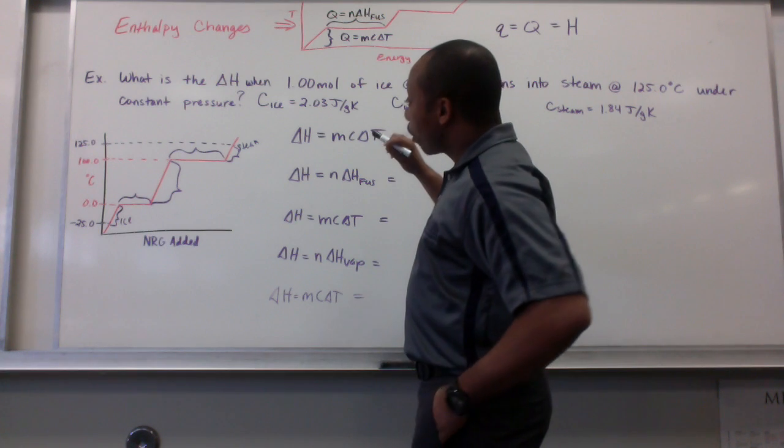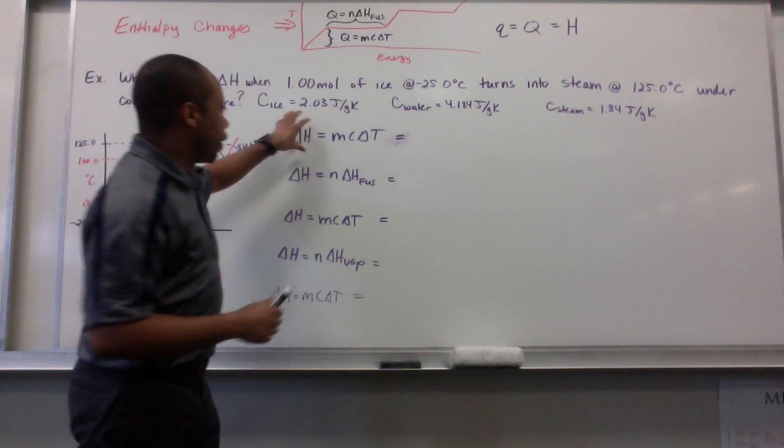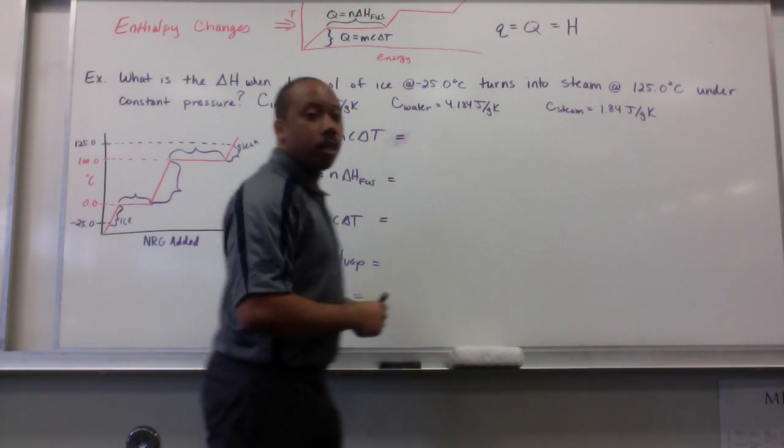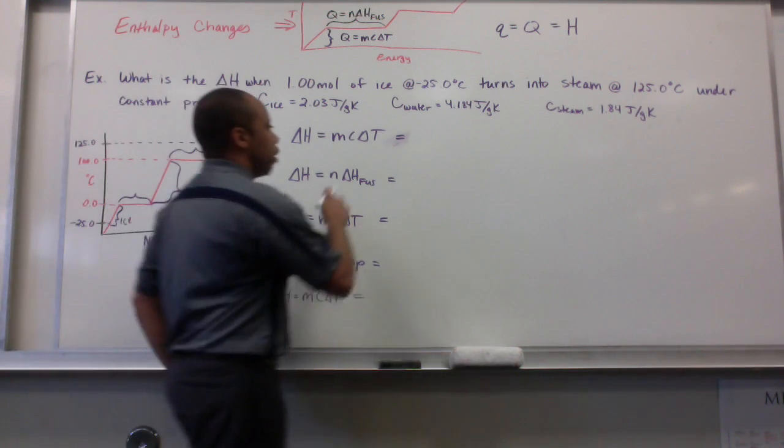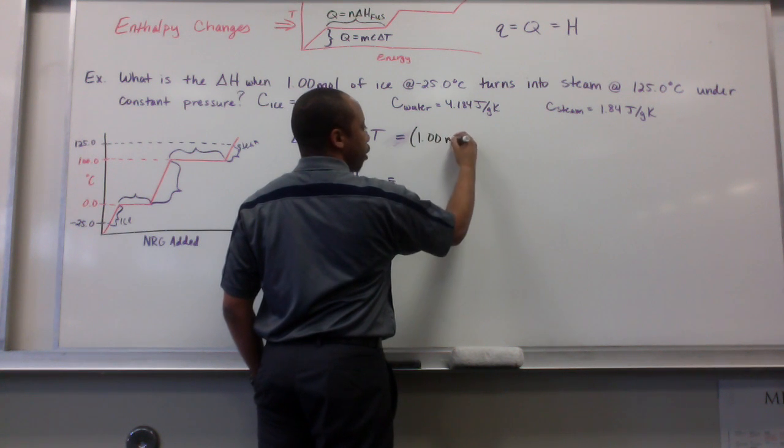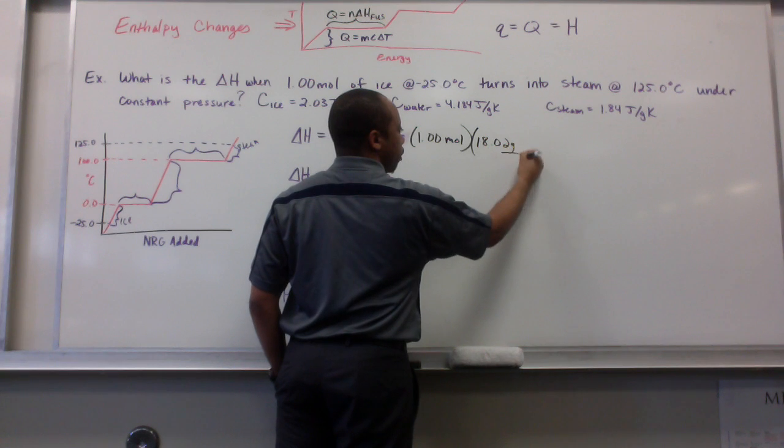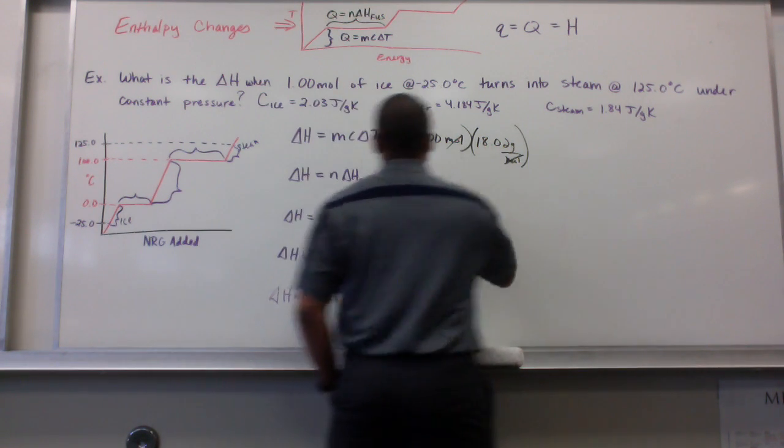So, first things first, we're going to go from negative 25 to 0 degrees. Now, instead of putting Q equals MCAT, I'm going to put delta H, because we know they're synonymous. So, this is the first step here, for this part there. I don't have a mass, but I can find it. I know I have 1.00 moles, and my molar mass of H2O is 18.02 grams per mole. Moles cancel. That's my M.